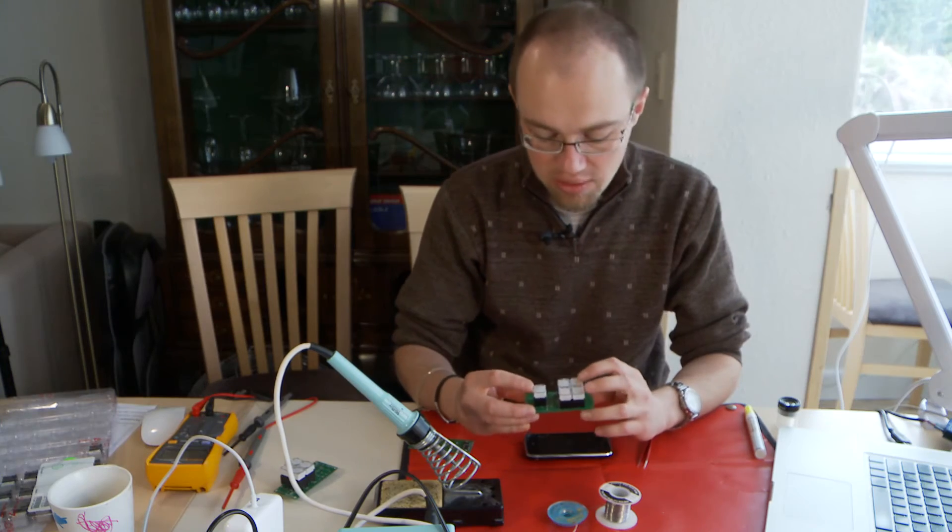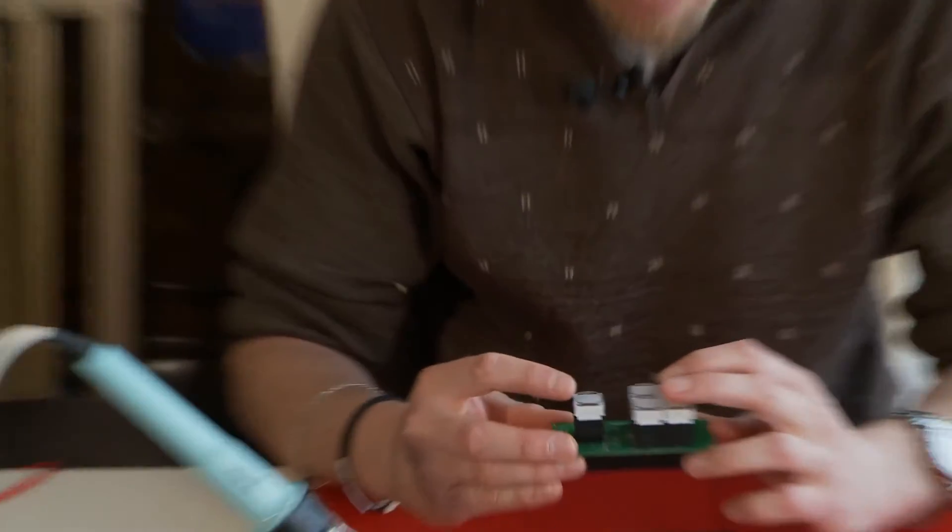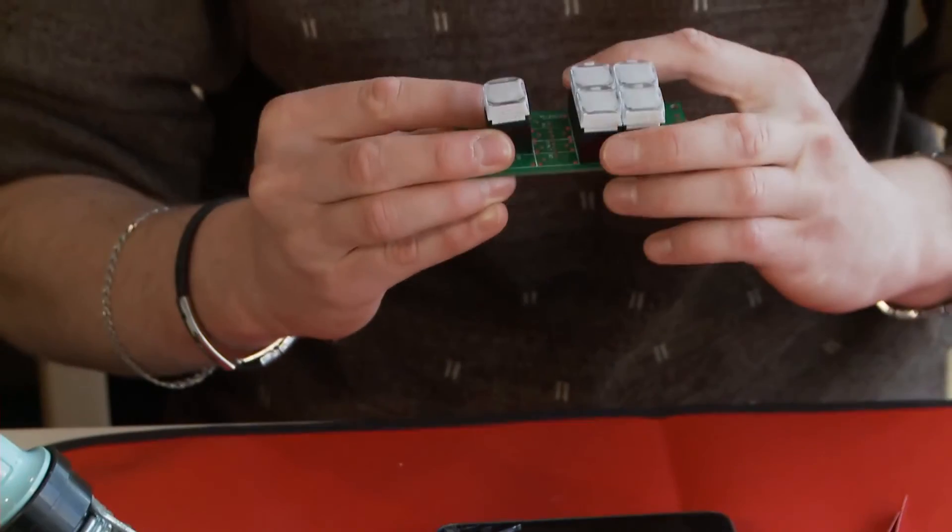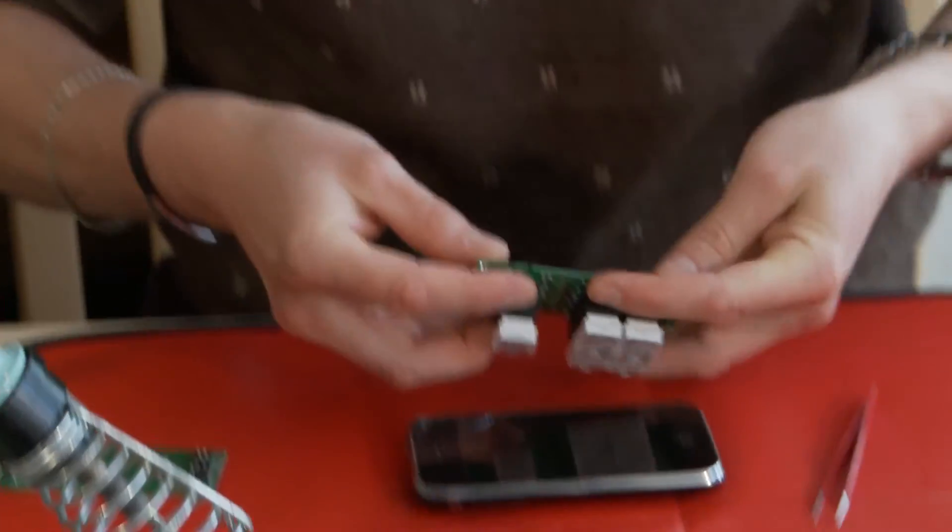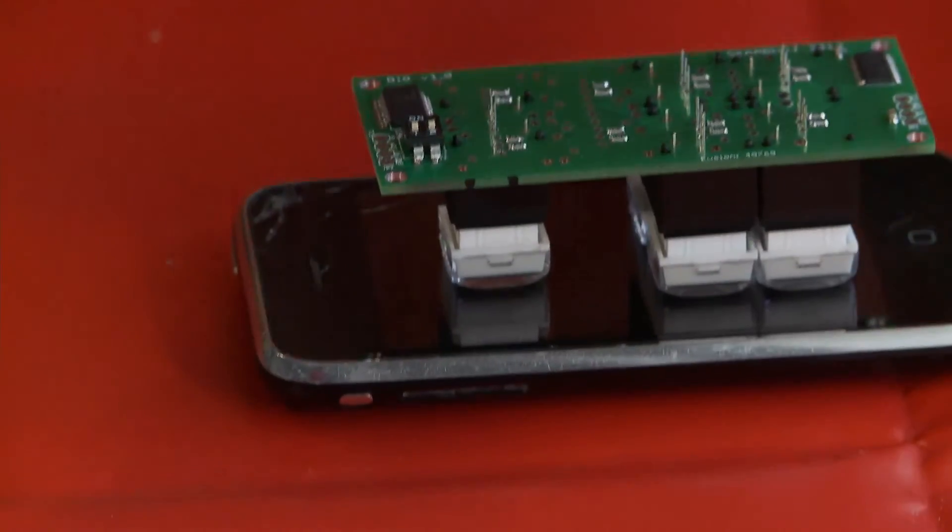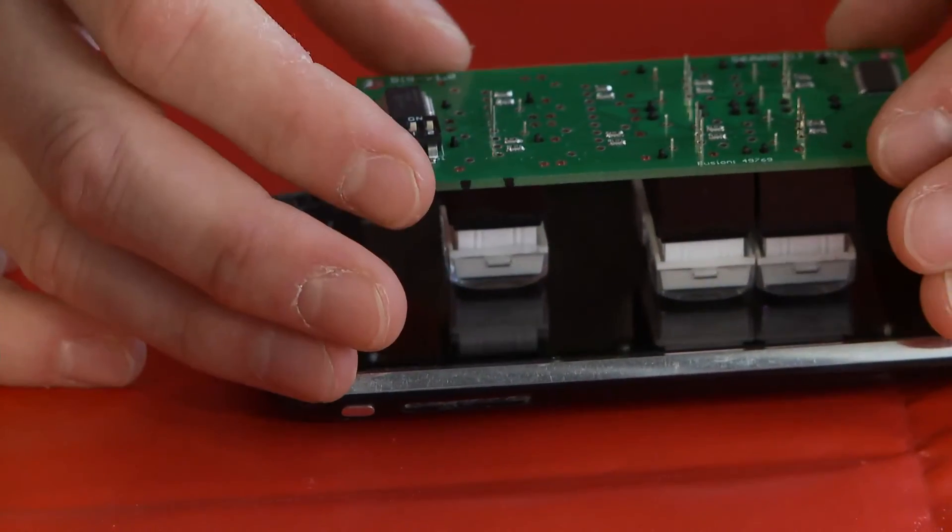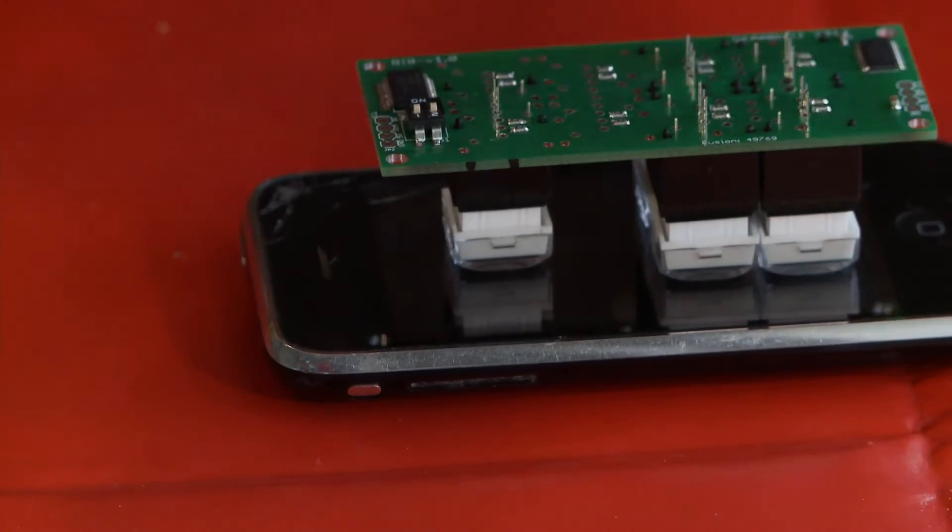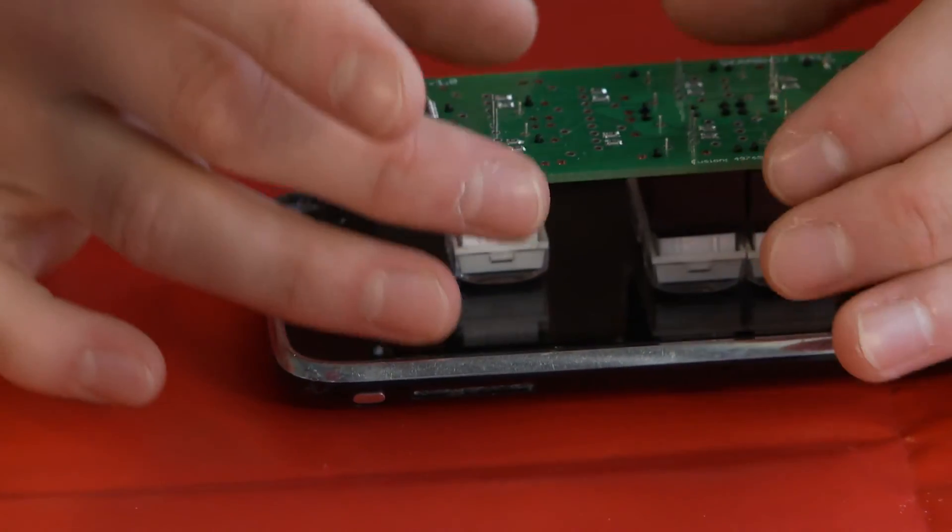And one good thing to do before soldering them is to place them on some flat surface as I am going to do on this phone. So they will be exactly flat when I solder them and they won't be on different levels.